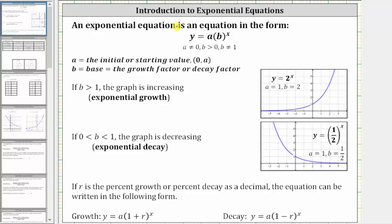Welcome to an introduction to exponential equations in two variables. An exponential equation is an equation in the form y equals a times b raised to the power of x. Notice how the variable x is in the position of the exponent. A is called the initial or starting value, which is the y value when x is zero, which also means zero comma a is the vertical intercept.